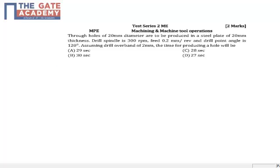Let's discuss a question from MPE Machining and Machine Tool Operations. What is given is through holes of 20mm diameter have to be produced in a steel plate which is again of 20mm thickness. The spindle speed, feed per revolution, and the drill point angle is given.